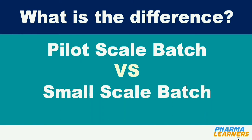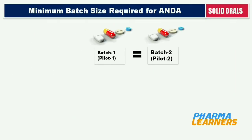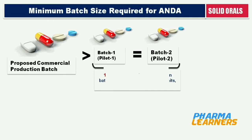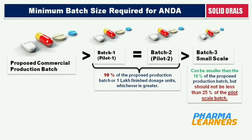For solid orals, FDA guidelines say 2 of the 3 batches should be at least 10% of the proposed production batch or 1 lakh finished dosage units, whichever is greater. These batches are called pilot scale batches. The 3rd batch can be smaller than 10% of the proposed production batch, but should not be less than 25% of the pilot scale batch.